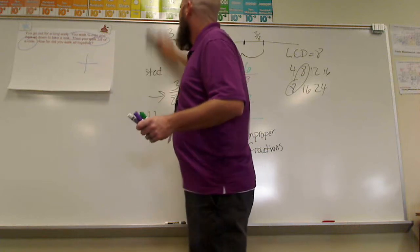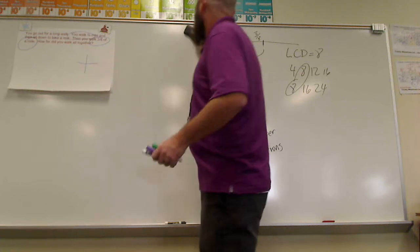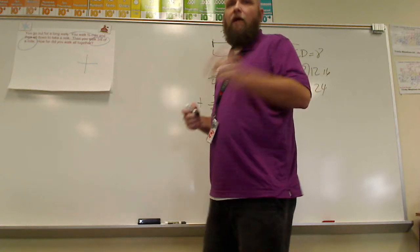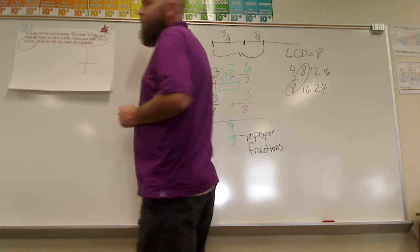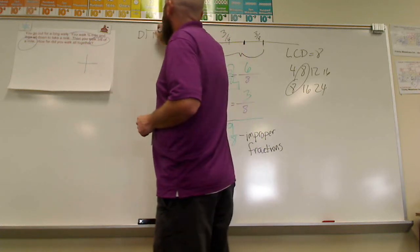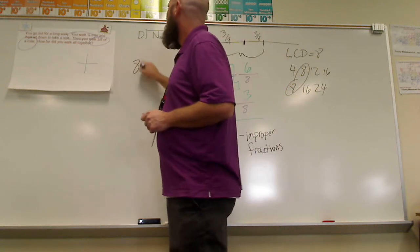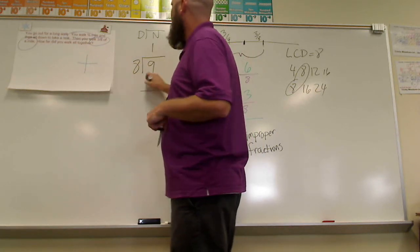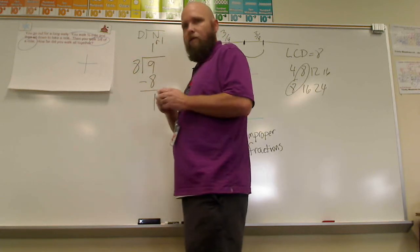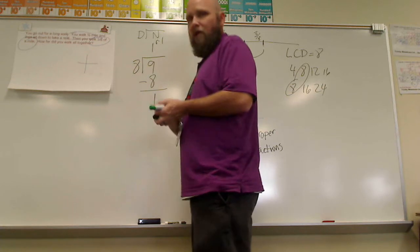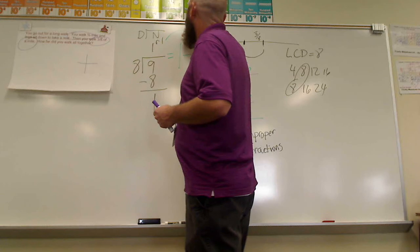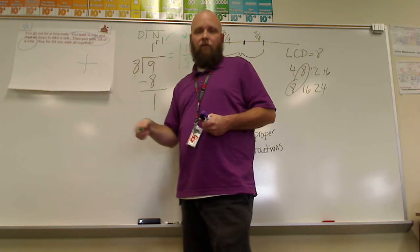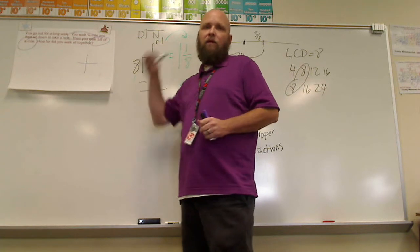To change from an improper fraction to a mixed number, it's a simple division problem. You divide the denominator into the numerator. In this case, we divide eight into nine. Eight goes into nine one time. One times eight is eight. Subtract and we get one — so that's one remainder one. Which we rewrite as one and one-eighth, where the remainder becomes the new numerator and the denominator stays the same.